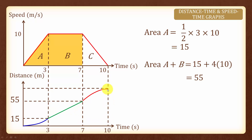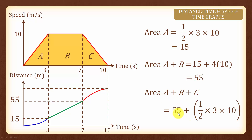For t equals to 10, we will need to find the area of the whole trapezium, or we can find the area of A plus B plus C. Since area of A plus B is 55, we need to find the area of C which is a triangle: half times 3 times the perpendicular height 10. Adding up all three areas gives us 70, and therefore at t equals to 10, the distance is 70 meters.